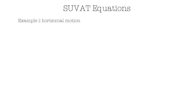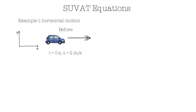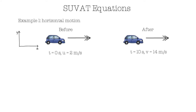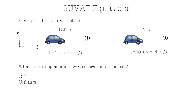Let's go through a few examples. In example 1, we'll be working with horizontal motion. First, let's draw the axes to show that we are taking up and the right-hand side as the positive. We have a car that is accelerating to the right. The initial velocity at T equals 0 is 2 meters per second. After a certain time, at T equals 10, its final velocity is 14 meters per second, still moving to the right. So what would the displacement and acceleration of this car be? Let's write SUVAT vertically as we fill in the values. We don't know the displacement, as this is what we are looking for. Initial velocity is 2 meters per second, final velocity is 14 meters per second. Acceleration is unknown but constant, and T, the time elapsed, is 10 seconds.